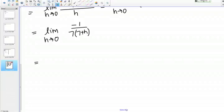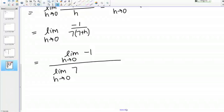I've got a quotient, so this is going to be the limit as H goes to 0 of negative 1 on top, and then on the bottom I've got several pieces. I've got a product and then I've also got a sum, so I'm just going to go ahead and split those things up all in one step. This is going to be the limit as H goes to 0 of 7 times the limit as H goes to 0 of 7 plus the limit as H goes to 0 of H.